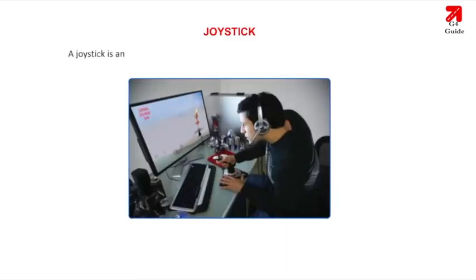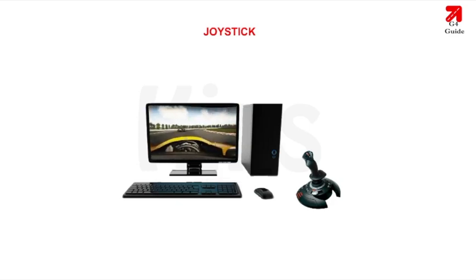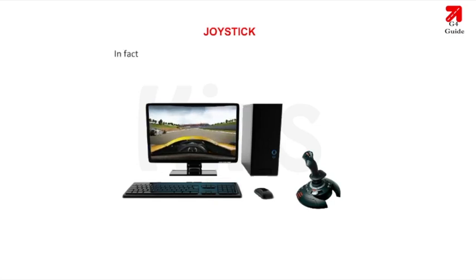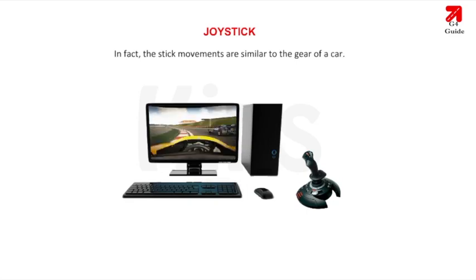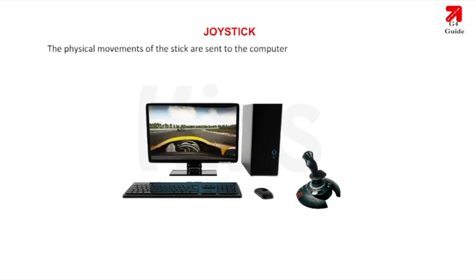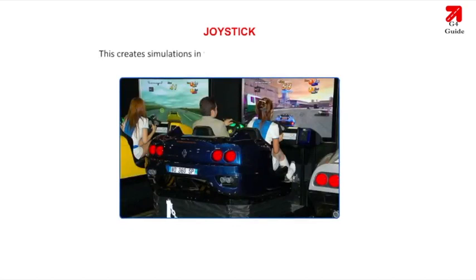Joystick is an input device which allows the user to move an object on the screen. It is normally used in video parlors for playing games. It is a moving stick which rests on a base with some push buttons on it. The stick movements are similar to the gear of a car. The physical movements of the stick are sent to the computer as input to move the cursor or object at different positions on the screen, creating animations in the game.